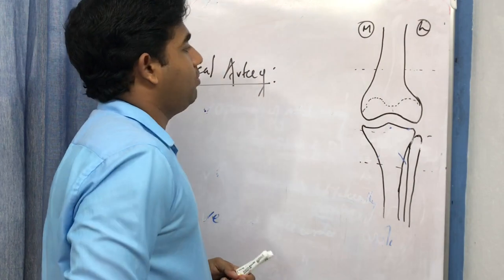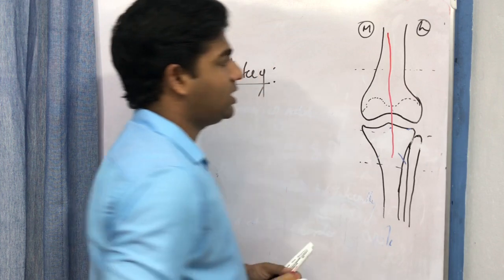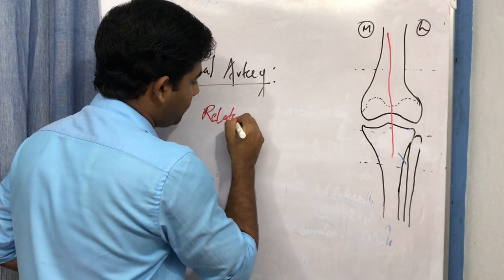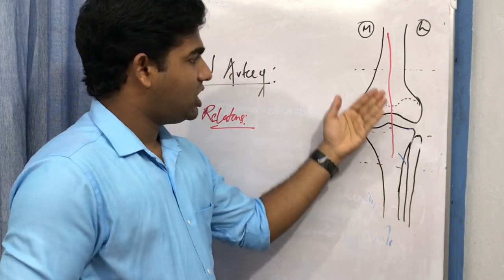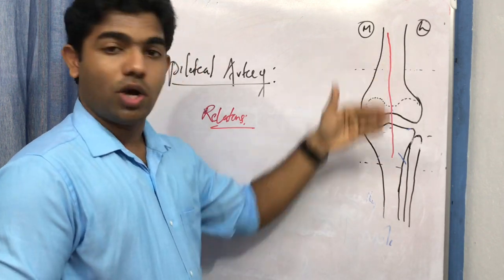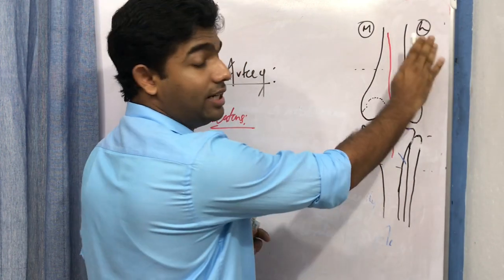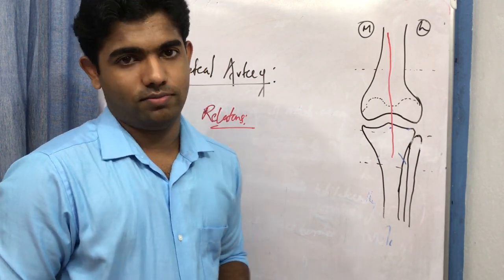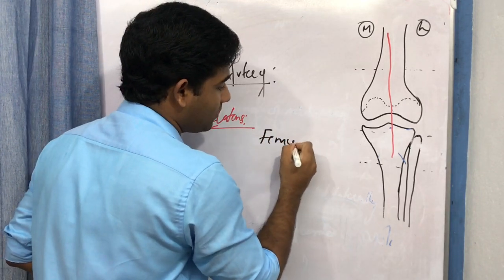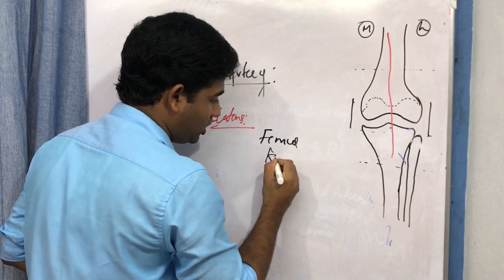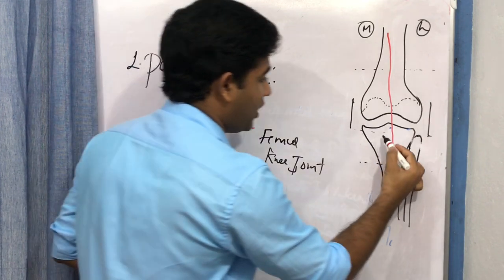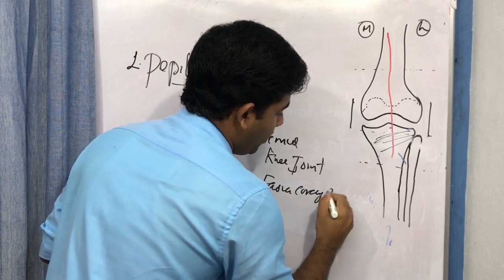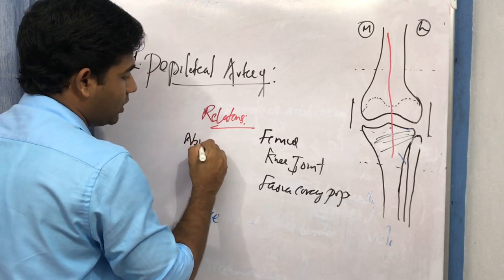Now let's look at the relationships of the popliteal artery. Imagine this board as the knee joint with the popliteal artery here. The anterior relationships from above backwards are: the lower end of the femur, then the posterior part of the knee joint, and then the fascia covering the popliteus muscle.